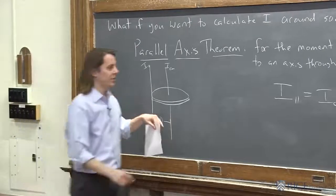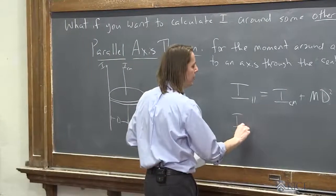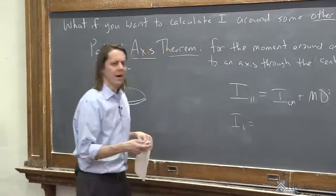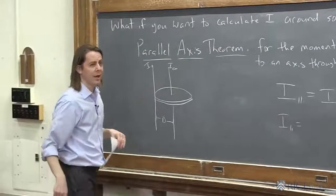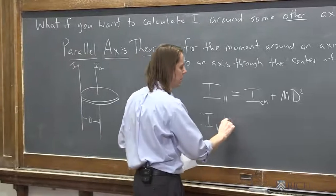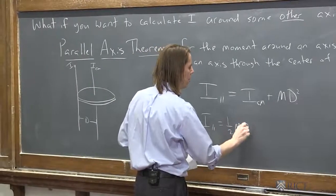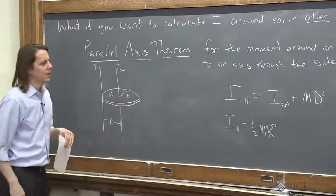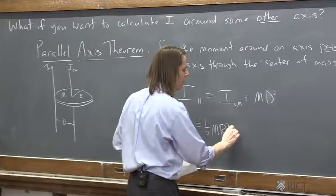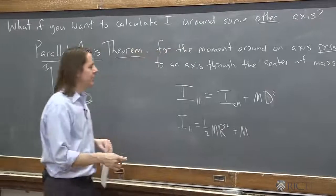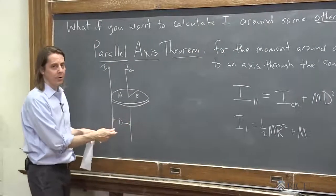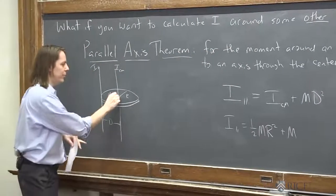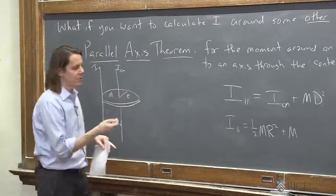So in this case, we would say the I parallel, the one we want, is the I through the center of mass, which is one half mr squared, where we have this thing has radius r and mass m, plus just m. And then the separation in this case just happens to be r, because we have one going through the center of the disk and one going through the edge, so they're different by r.